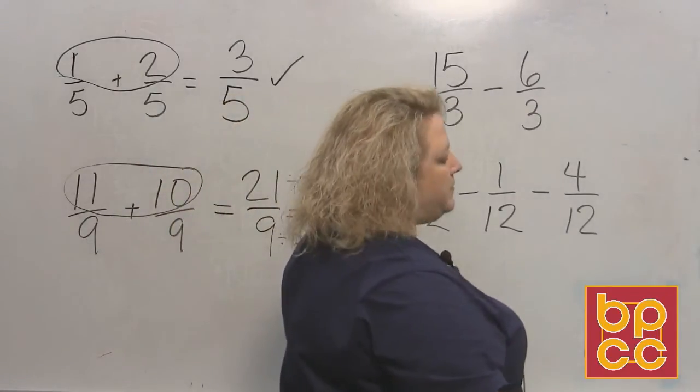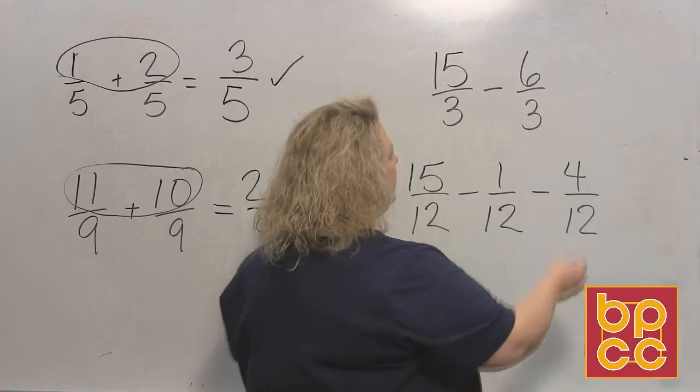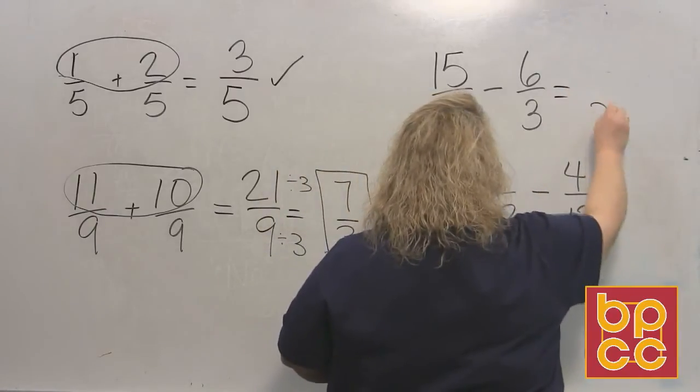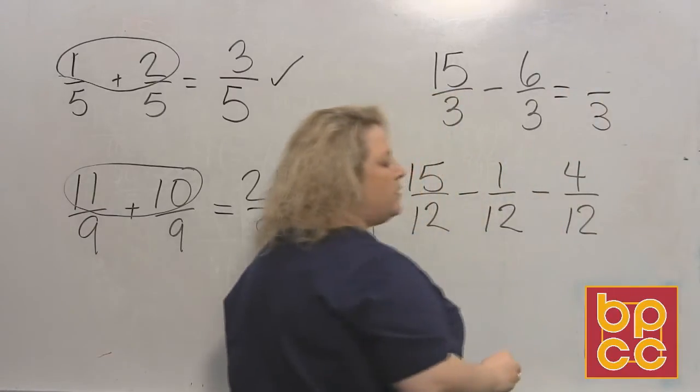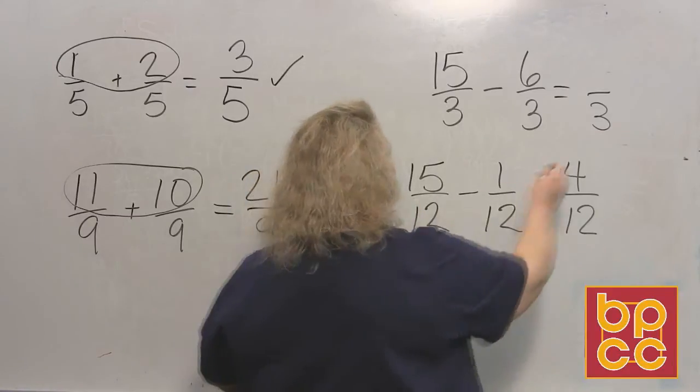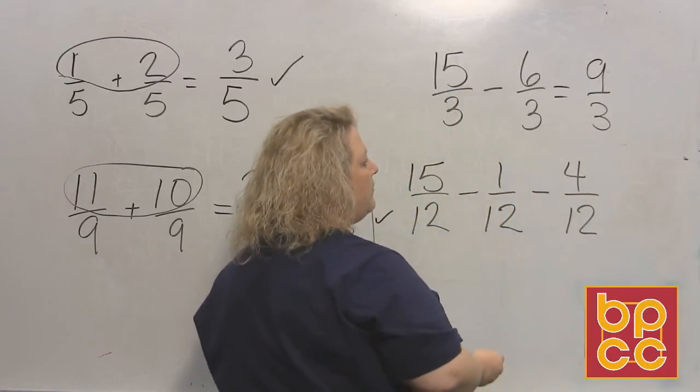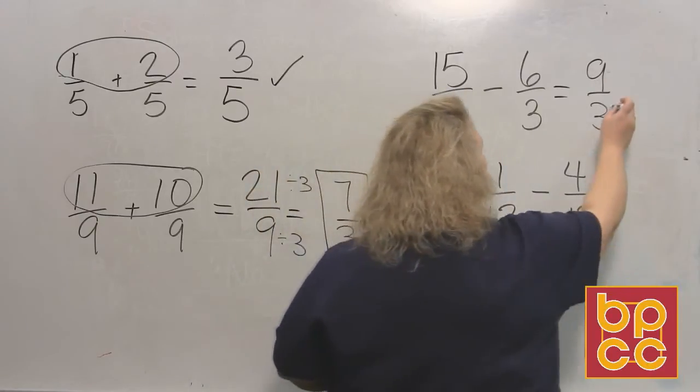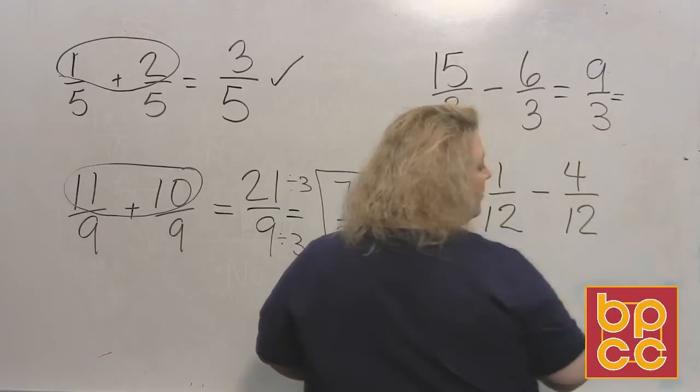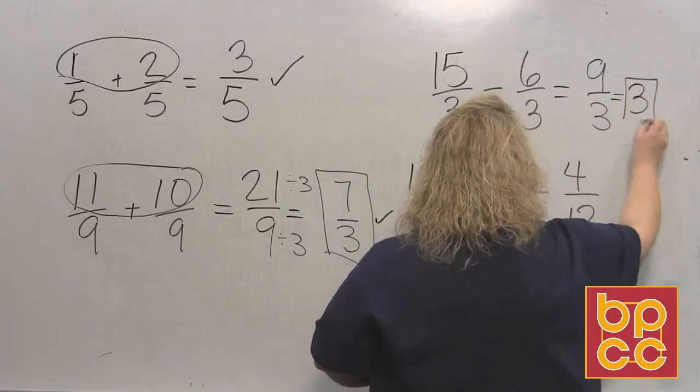Alright, so over here we have subtracting. So subtracting fractions, easy as can be, all you need is an LCD, which we have, and it's three. So we write the bottom, collect the top. Fifteen minus six would be nine. Reduce the fraction. I can reduce nine and three. Nine actually is divisible by three, and nine divided by three is three. Then I stop.